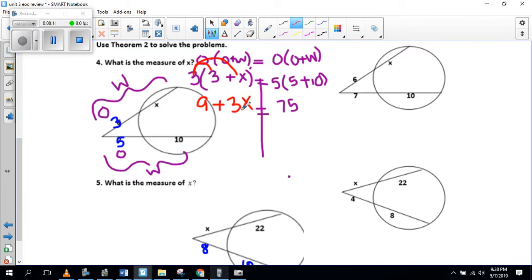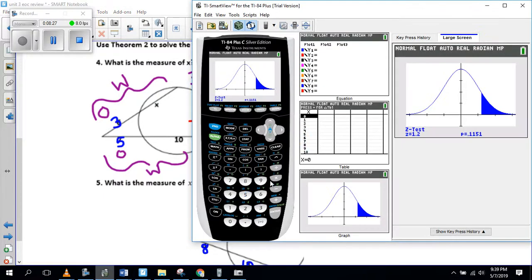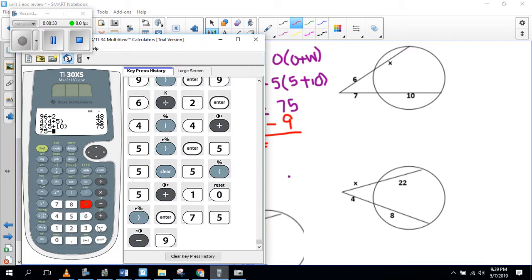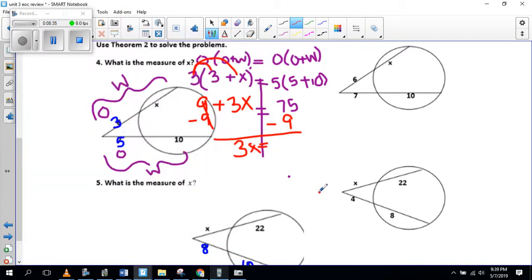Then all we're going to do now is solve for X. We want to get X by itself. So we subtract nine from both sides. So subtract nine. So we get three X equals, and then 75 minus nine, 75 minus nine equals 66. And then we're going to divide by three because we got to get X completely by itself. So if we divided that, we would get X equals 22.